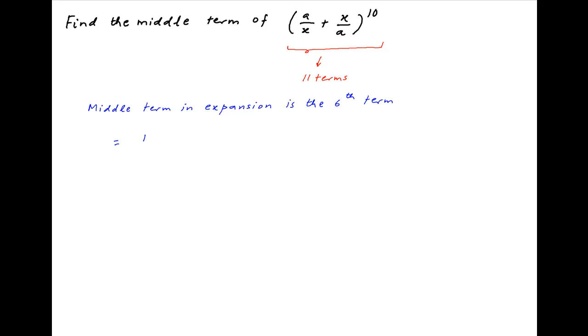Its value equals 10 choose 5 multiplied by (a/x) raised to the power (10 minus 5) multiplied by (x/a) raised to the power 5.